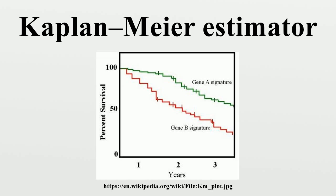A plot of the Kaplan-Meier estimator is a series of declining horizontal steps which, with a large enough sample size, approaches the true survival function for that population. The value of the survival function between successive distinct sampled observations is assumed to be constant.